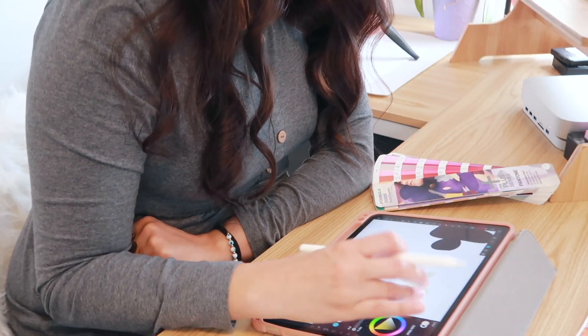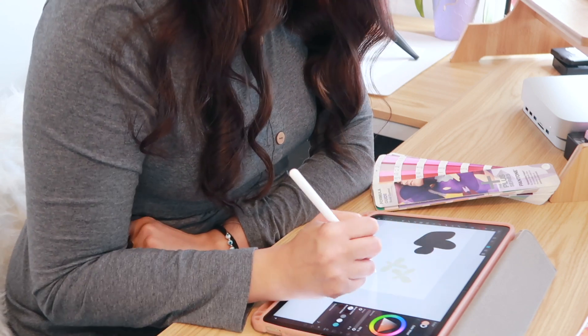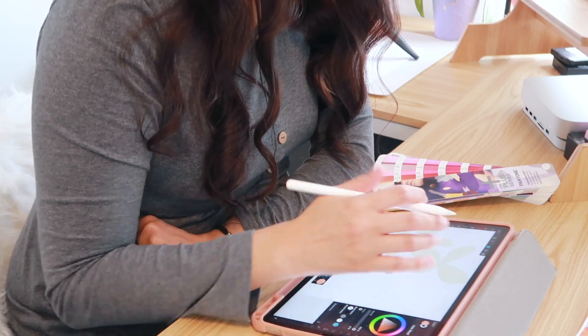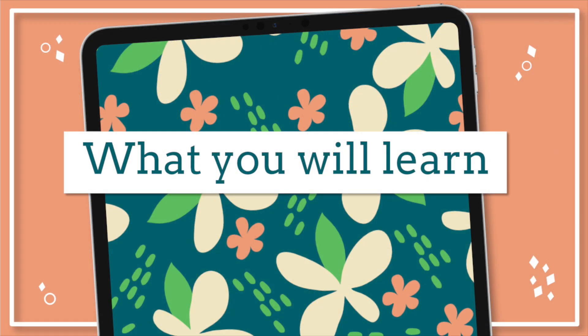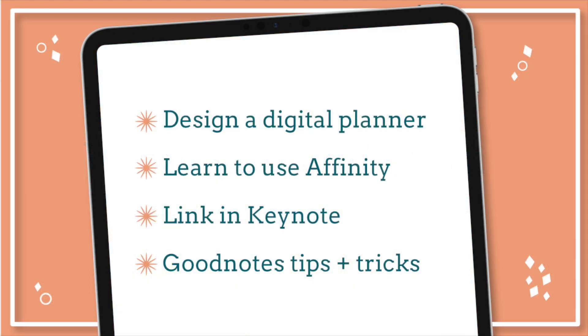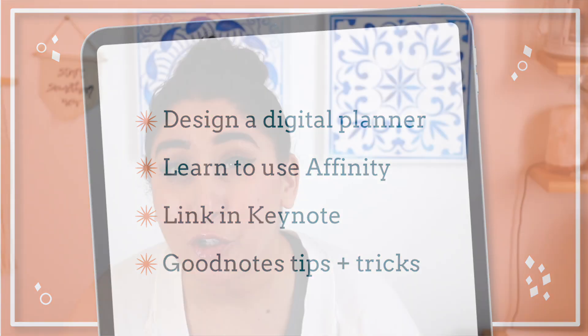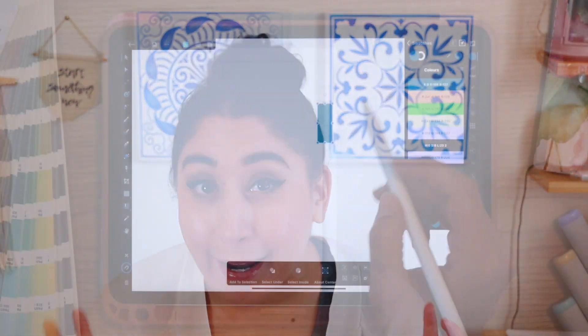This is because we're basically going through the process of creating in the program and then you get a tangible product at the end that you can use. You will learn how to create your own digital planner in the Affinity Designer app right on your iPad, and how to link that file within the Keynote app. We will start with the basics of understanding the toolbars and functions in the Affinity Designer workspace and then start to build out our digital planner. You will learn how to design basic layouts, create pages, customize those pages, and get an understanding of the layers function. We will also learn how to create tabs and how to animate them.